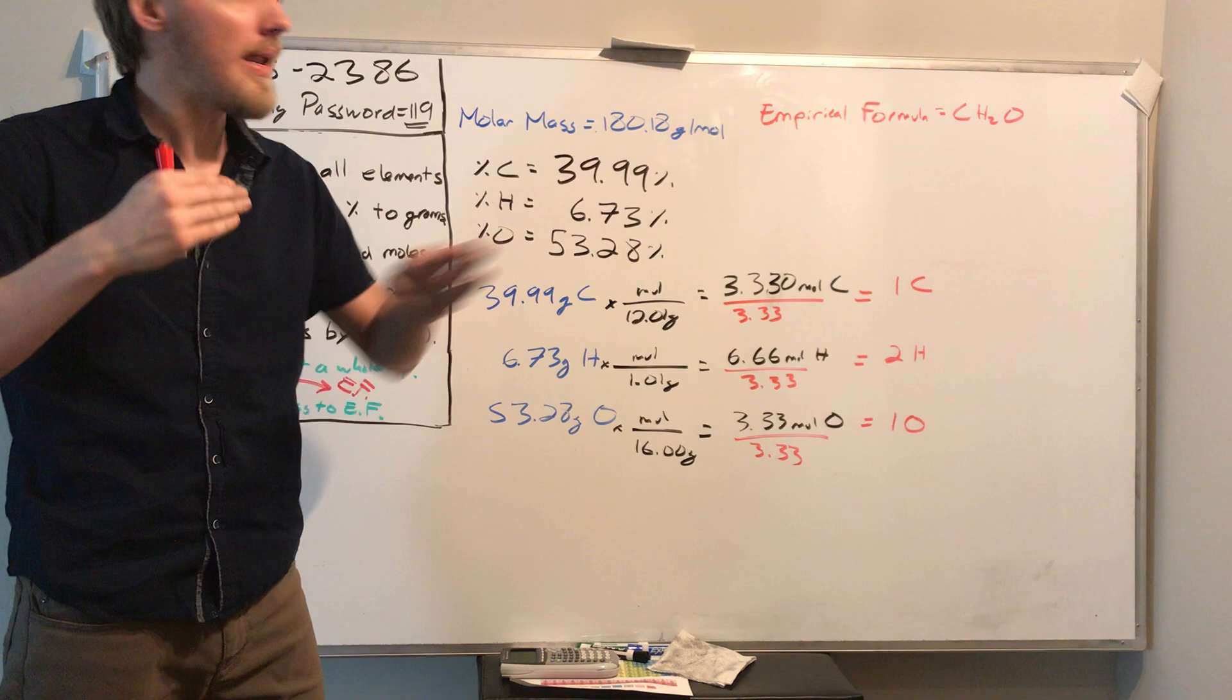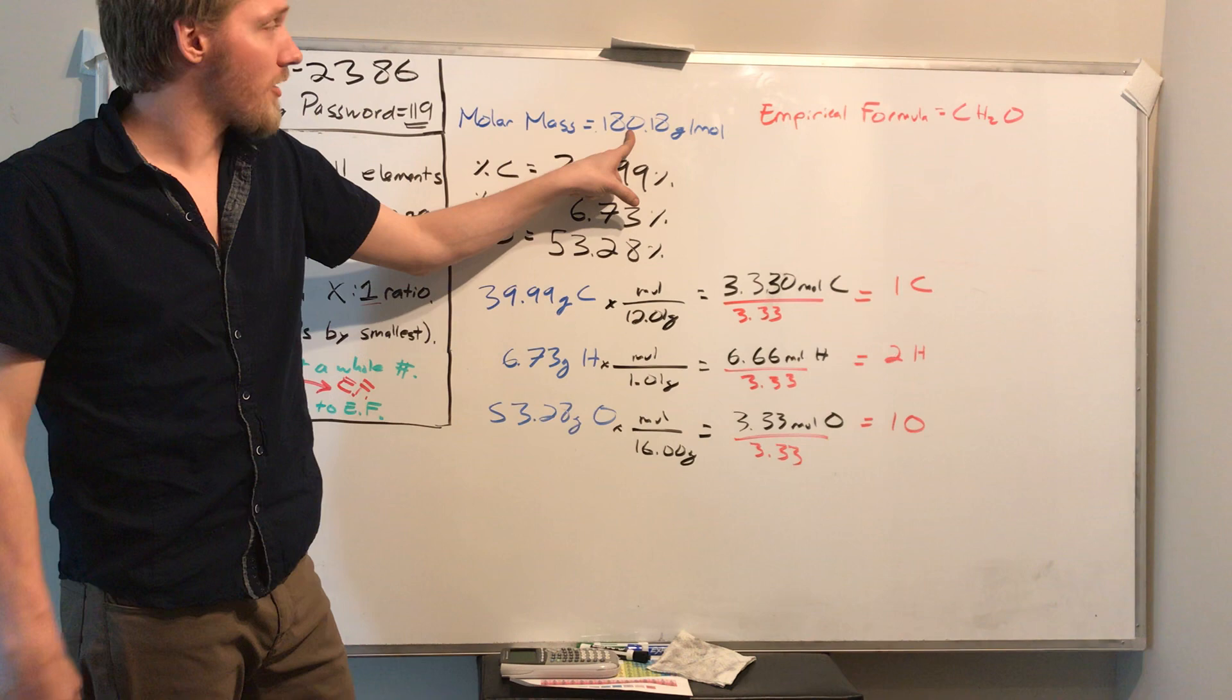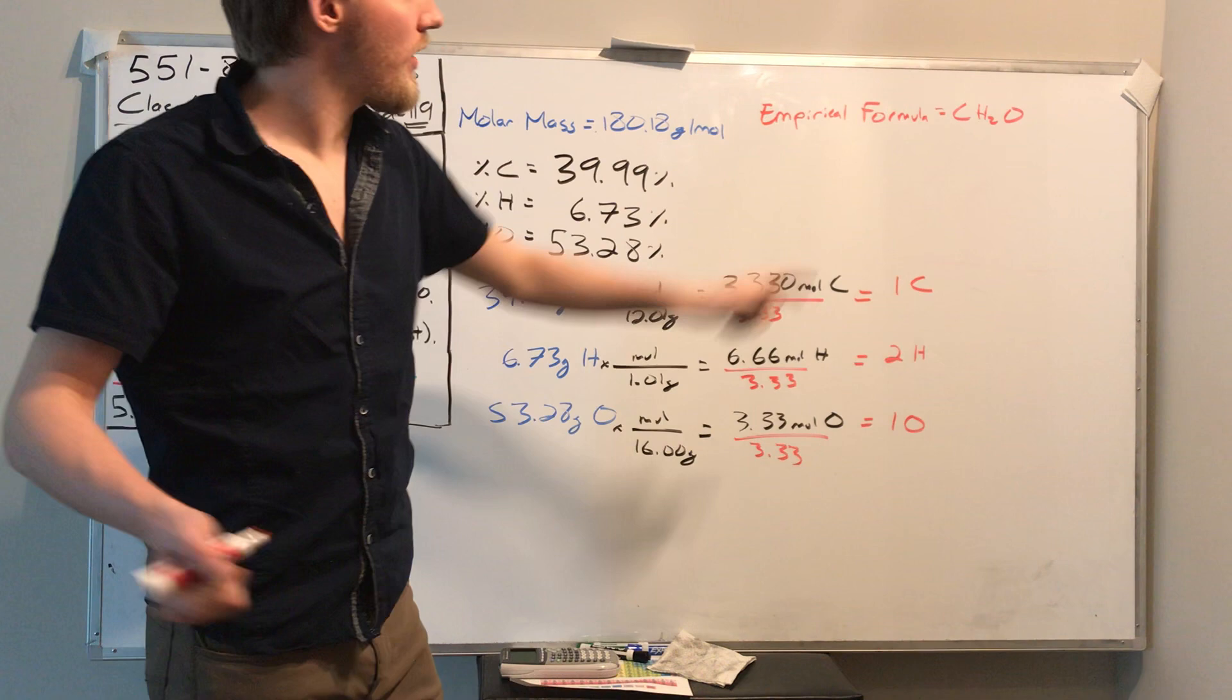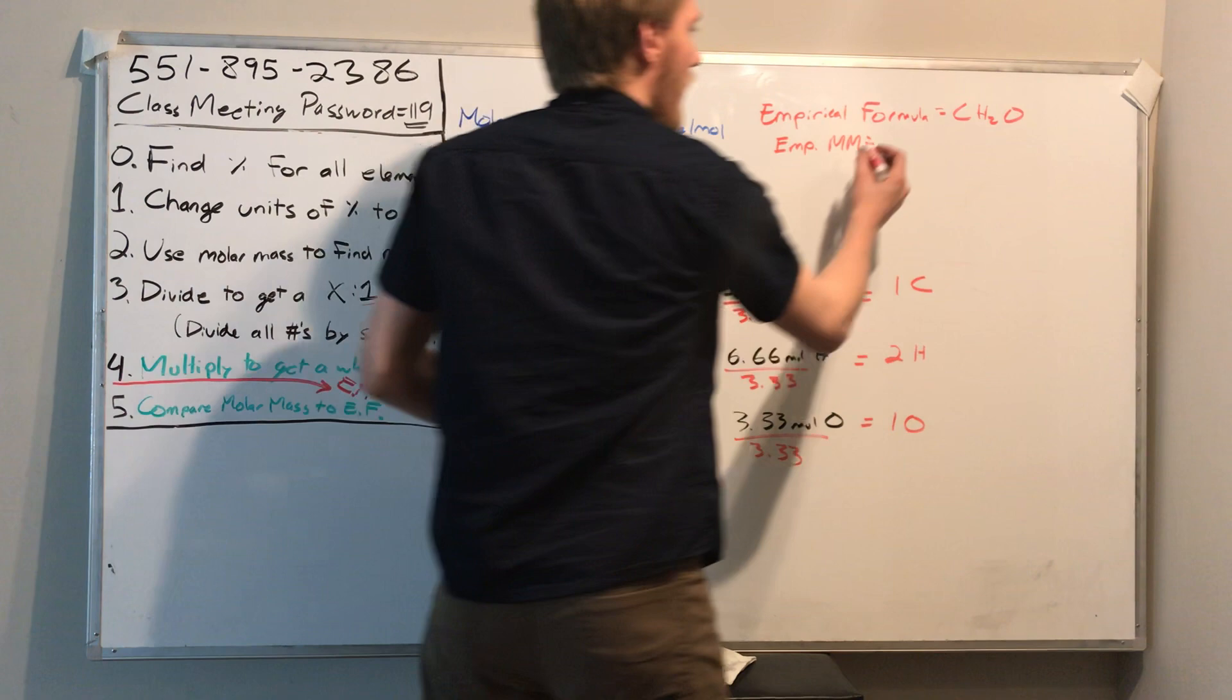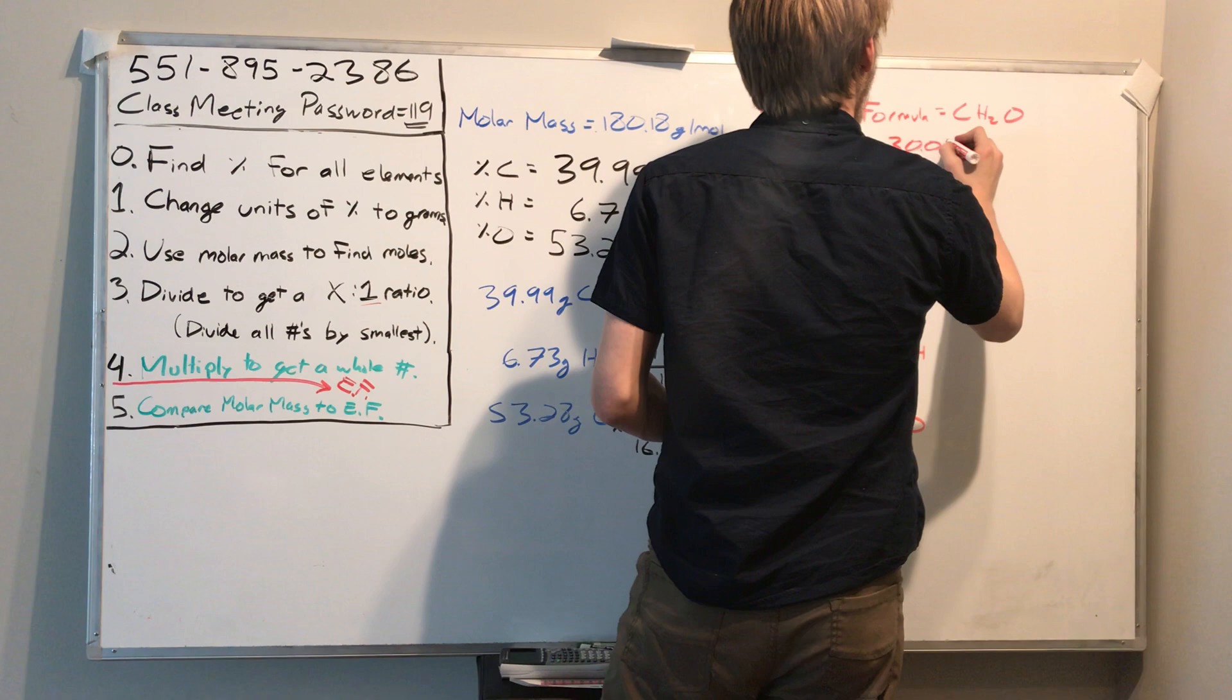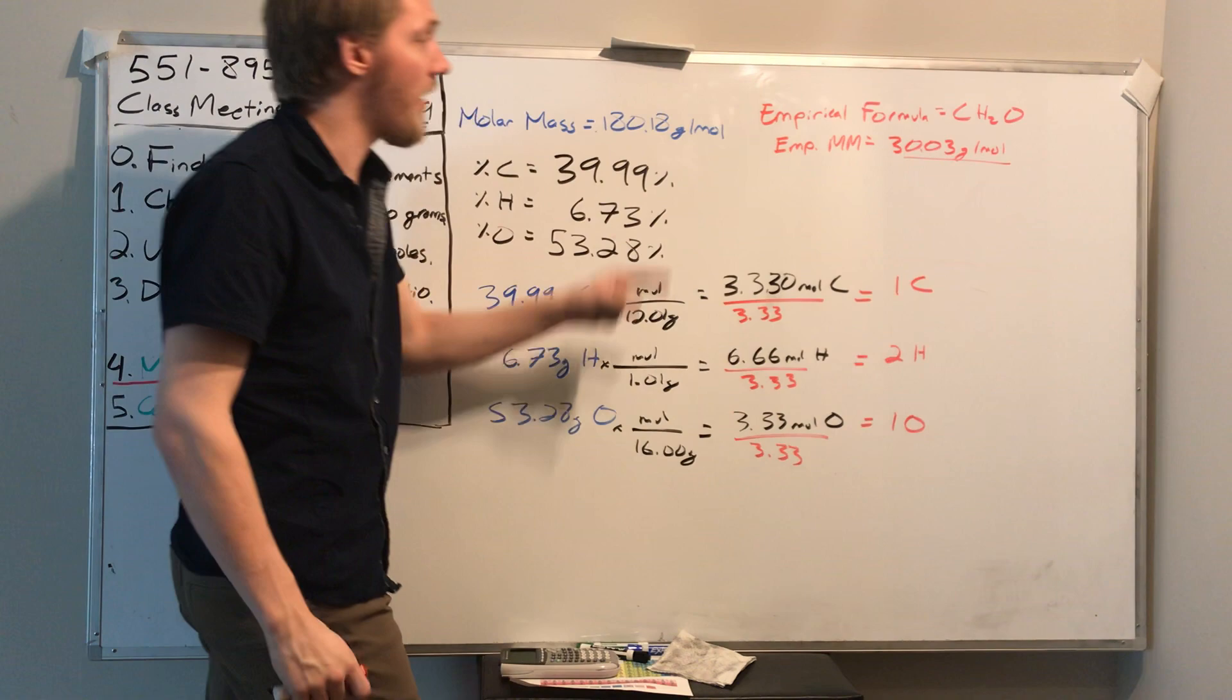Okay, so we've gotten the empirical formula, and that's as far as we've gotten so far. But I'm going to know what the real formula is. How many carbons are there? I know it's a 1 to 2 to 1 ratio of carbon to hydrogen to oxygen, but how many are there really? And to do that, we need to compare to the molar mass. The molar mass of this compound is 180.18. Well, what's the molar mass of this compound? Let's figure out what that is. In fact, I'll call it the empirical molar mass. The empirical molar mass is just the molar mass of this guy, CH2O. 12 plus 2 plus 16 should give you 30.03 grams per mole.